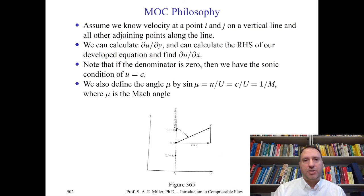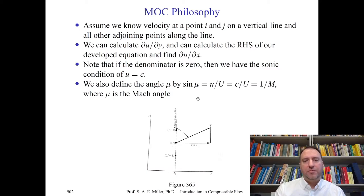There's an x direction and a y direction. The y direction will be cross-stream, and there's some kind of characteristic line which varies with index j, say j, j+1, and j-1. As we increment j above and below, we can go to other known values discretized in the method of characteristics line. If we increment i+1, we go to the next line over. We can calculate partial u partial y, compute all the right-hand side of our developed equations, and find partial u partial x to advance our solution.